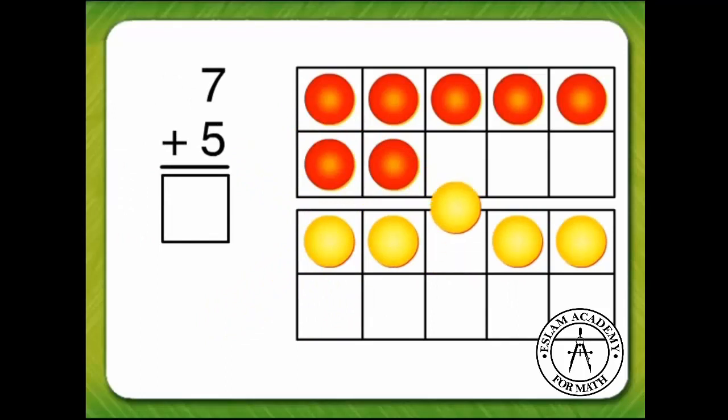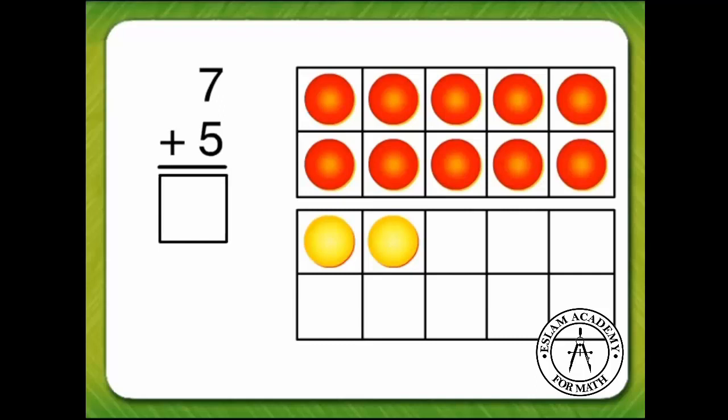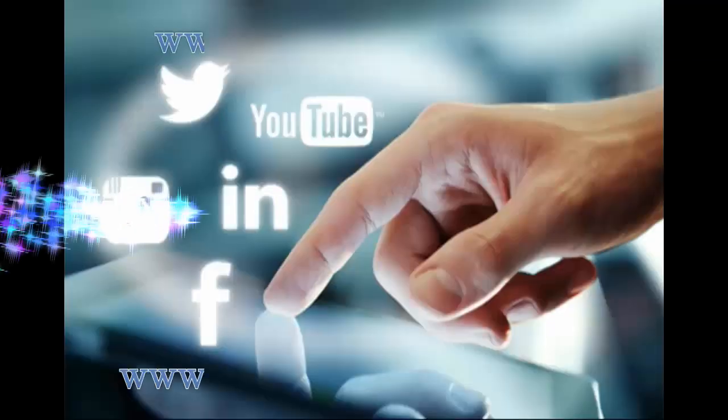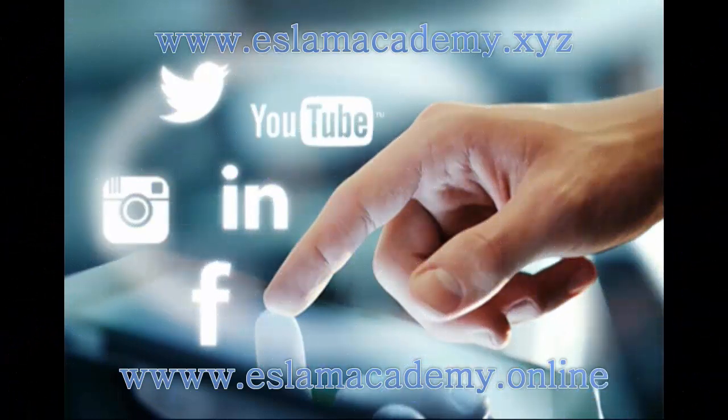Now move 3 of the 5 yellow counters up to the top 10 frame to make 10. 7 plus 5 is the same as 10 plus 2. 10 plus 2 equals 12. And 7 plus 5 equals 12.